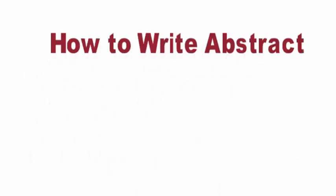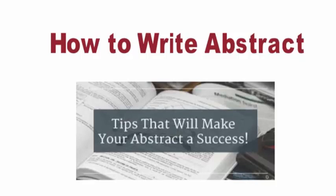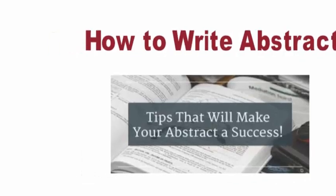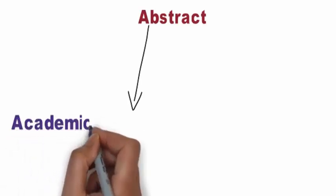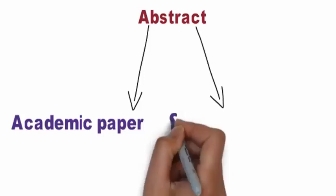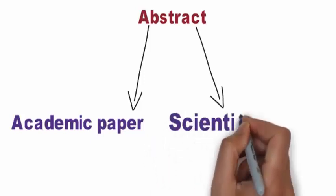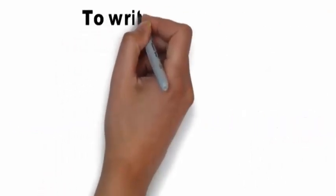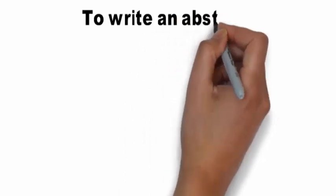If you need to write an abstract for an academic or scientific paper, don't panic. Your abstract is simply a short, stand-alone summary of the work or paper that others can use as an overview. An abstract describes what you do in your essay, whether it's a scientific experiment or literary analysis paper.